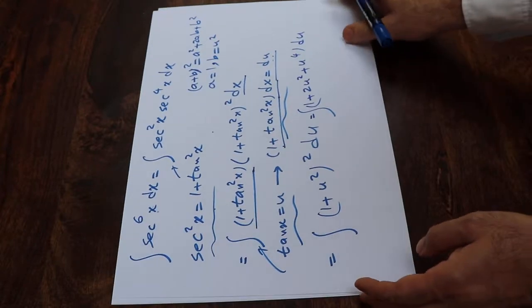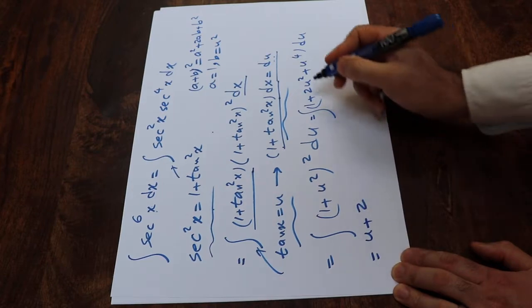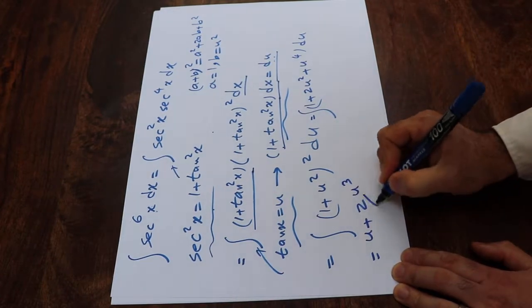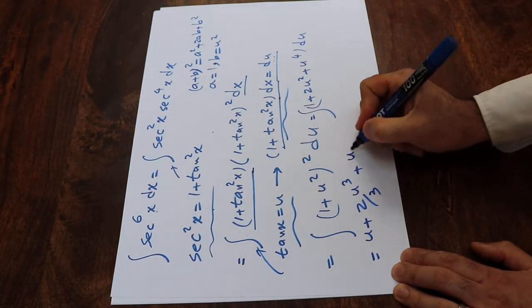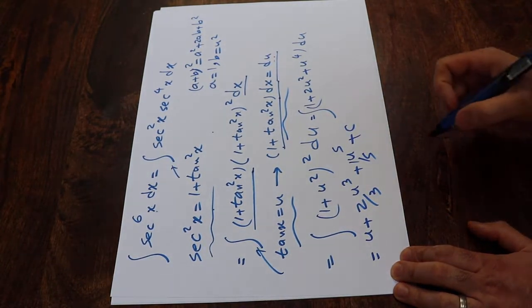Which will be equal to integral of 1 is u, integral of u² is u³ divided by 3, and integral of u^4 will be u^5 divided by 5 plus c, which is the constant of the integral.